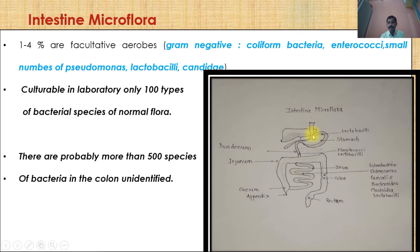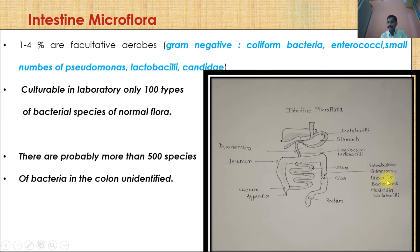Diagrammatically, the microflora distribution is as follows: in the stomach, mostly lactobacilli are present because they tolerate acidic conditions. In the duodenum, streptococci and lactobacilli are present. In the small intestine and large intestine, Enterobacteriaceae, Enterococcus faecalis, Bacteroides, Clostridia, and lactobacilli are present and normally grow inside the intestine.